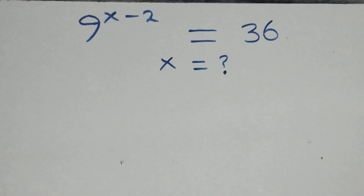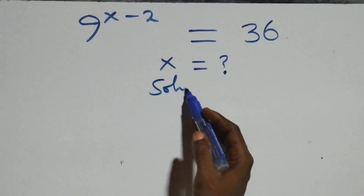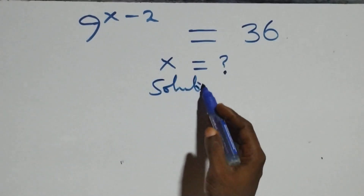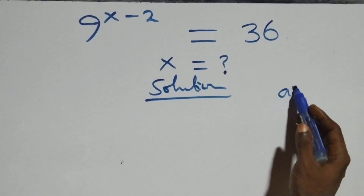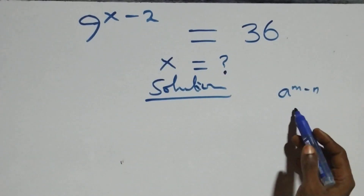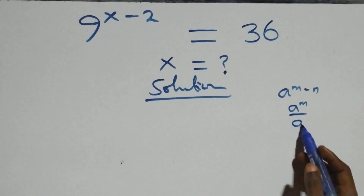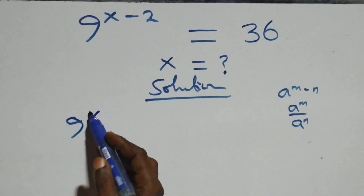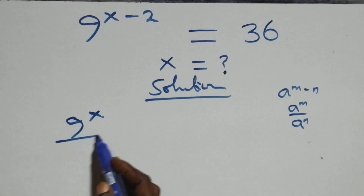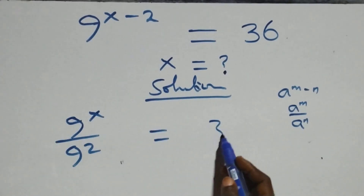How to solve this nice exponential equation. What we have here follows when we have a raised to power m minus n, which is the same as a raised to power m over a raised to power n. That is, this becomes 9 raised to power x over 9 squared equals to 36.